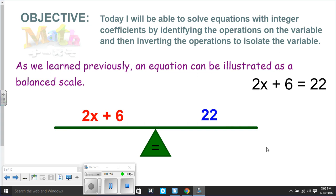We also learned previously that an equation can be illustrated as a balanced scale. And when we're solving for the equation, we're going to undo what's being done to the variable, but whatever we do to one side of the equation, we have to do to the other to keep it equal.